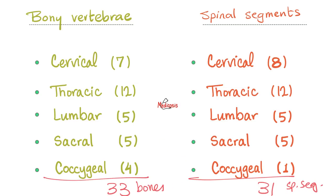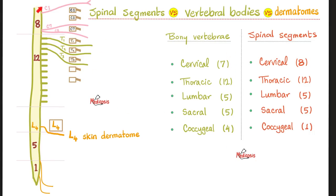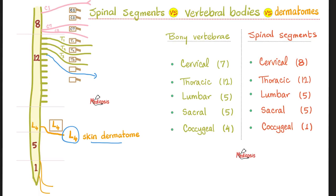This creates a conundrum: C1 nerve passes above C1 vertebra, C2 above C2, and so on through C7. But C8 nerve runs below C7 vertebra, and from then on every nerve passes below its corresponding vertebra. So T1 nerve is under T1 vertebra, T2 under T2, etc. The T4 nerve passes below T4 vertebra to supply the T4 dermatome; L4 nerve passes under L4 to supply the L4 dermatome.